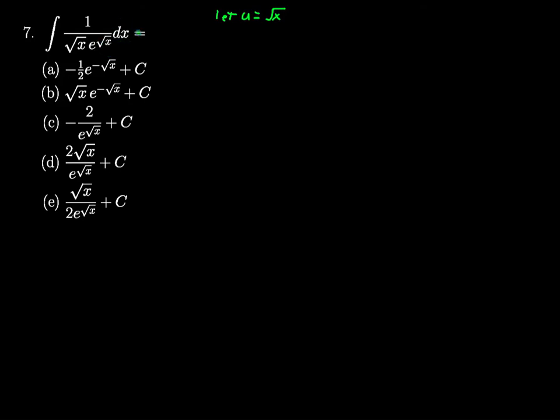But I still have a dx here, so let's take the derivative and find out what dx is. So this means that du dx is equal to 1 divided by 2 root x. Now, I've memorized the derivative of the square root, but if you don't have that memorized, it's this easy. The square root of x is just x to the 1 half.